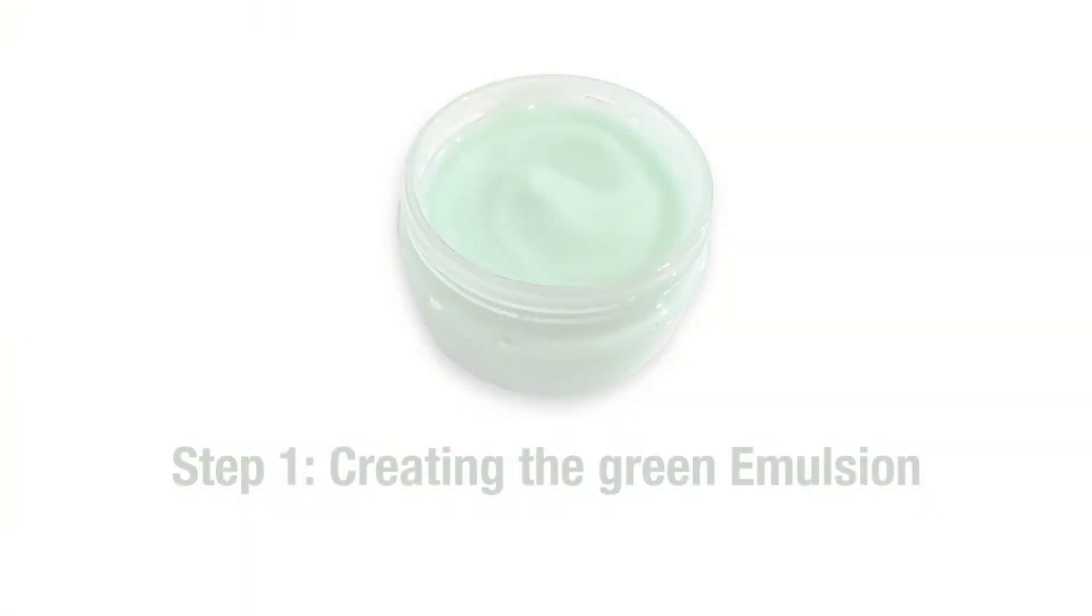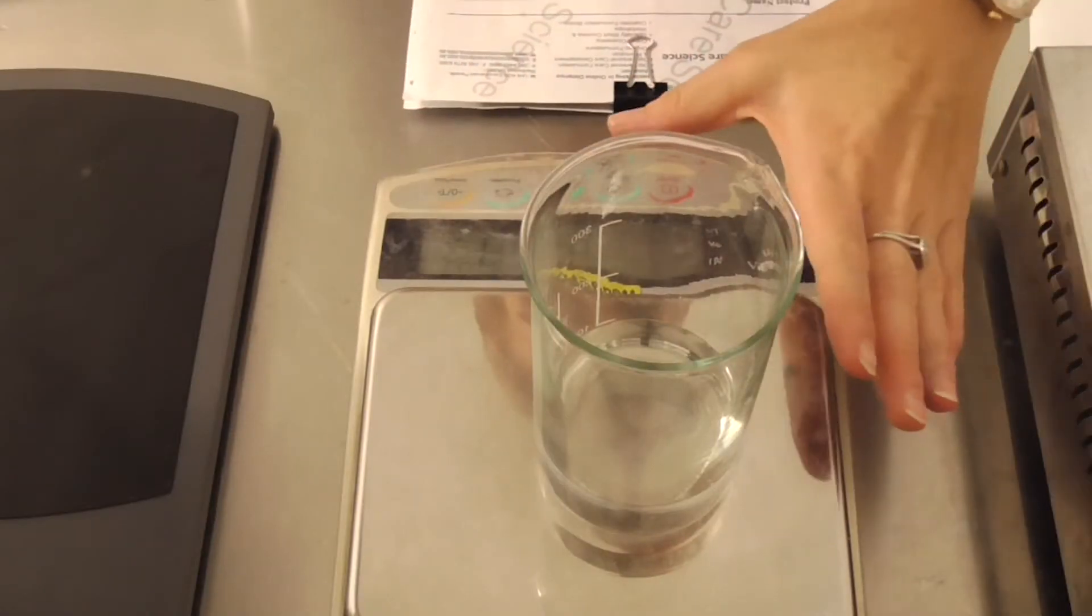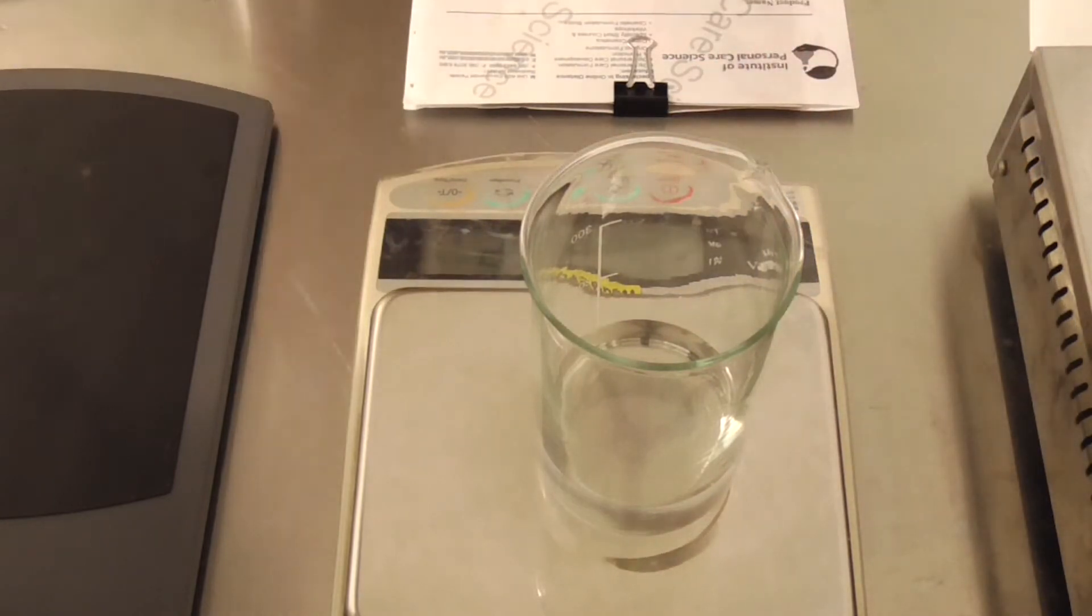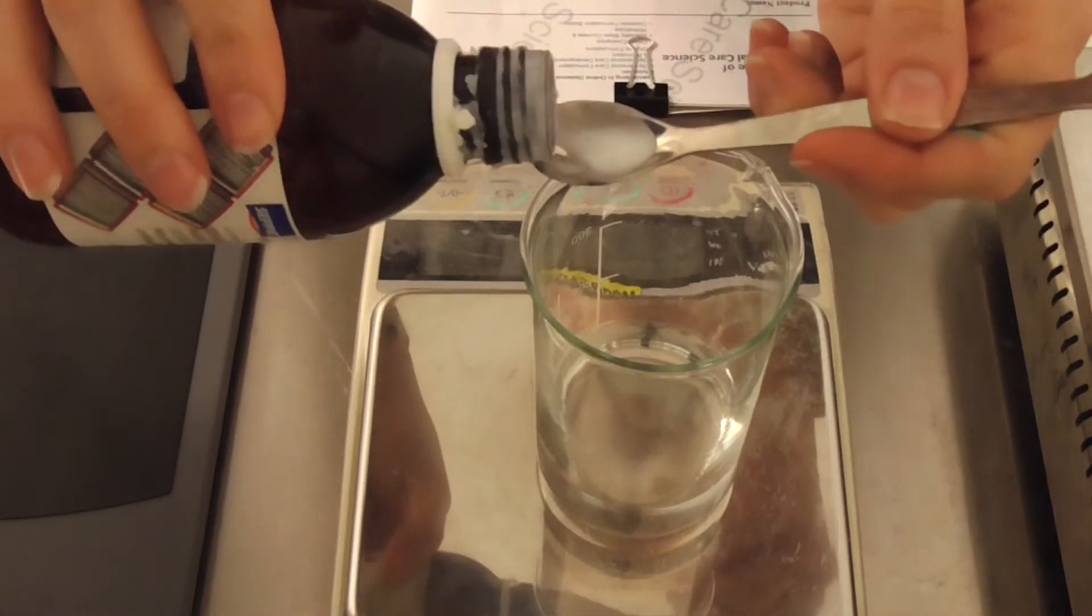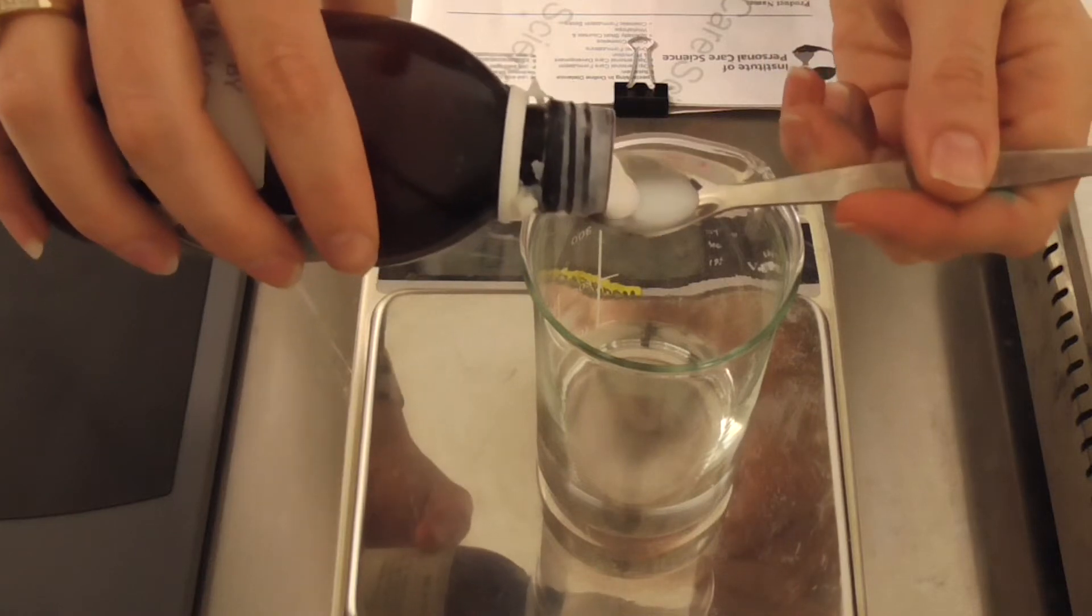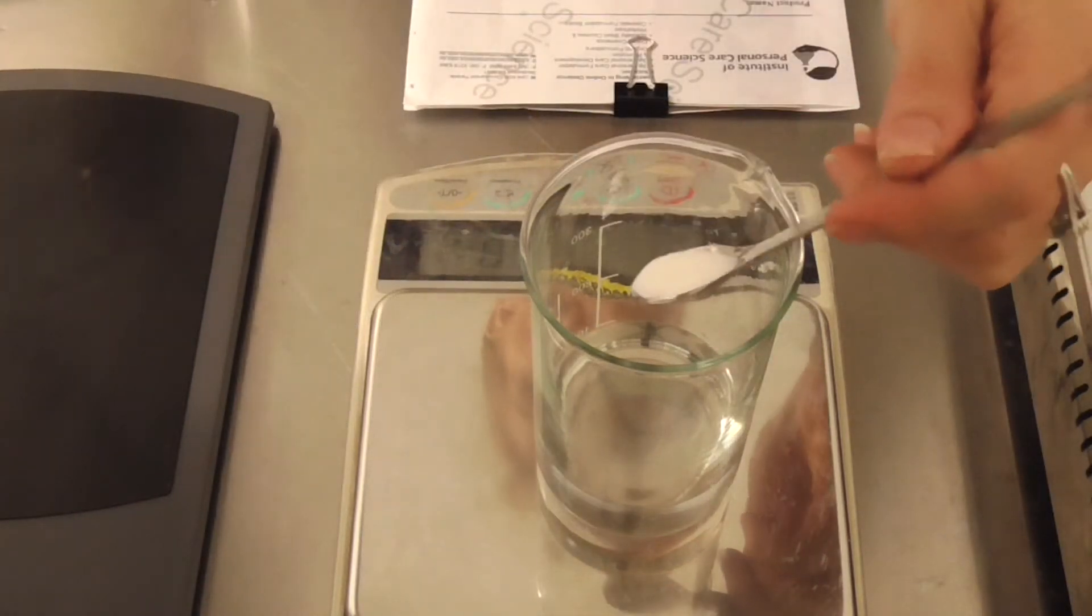First, let's create that emulsion. Now I'm starting here with the water. So this is just the water measured out. And to this I'm going to add CEPI Plus 400. Now this particular material is important in this formula because it's a very effective polymeric emulsifier.